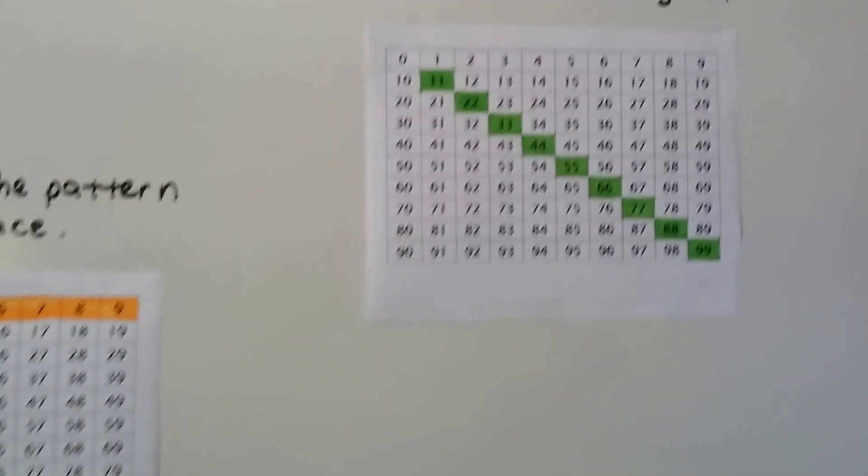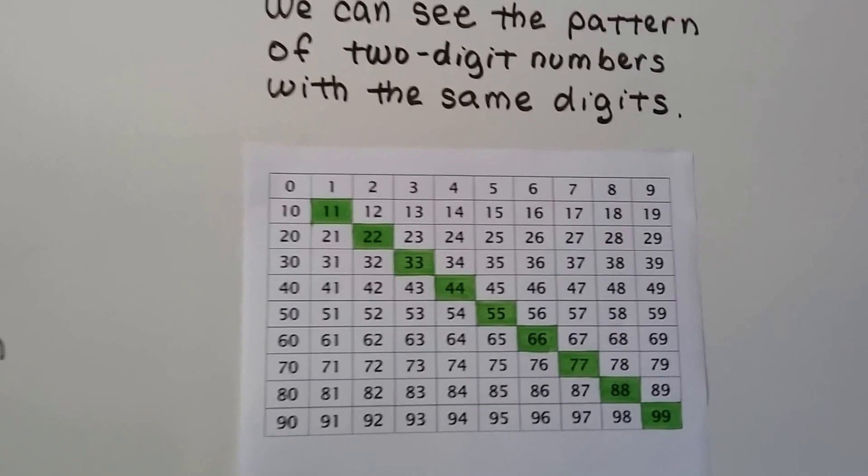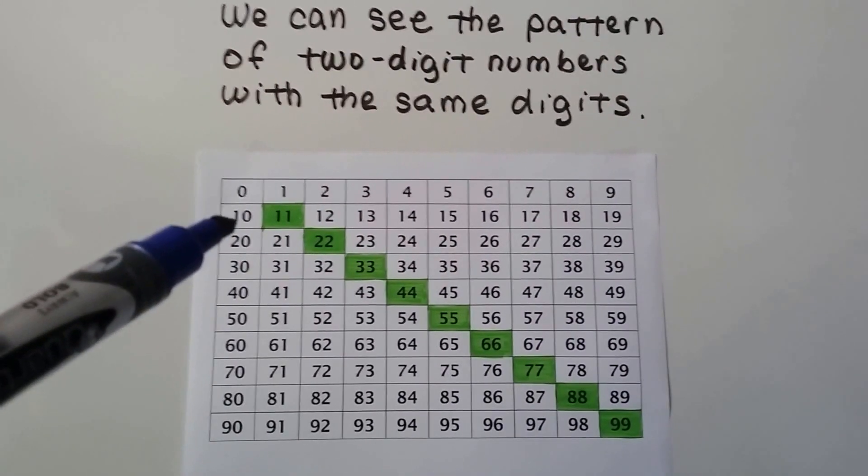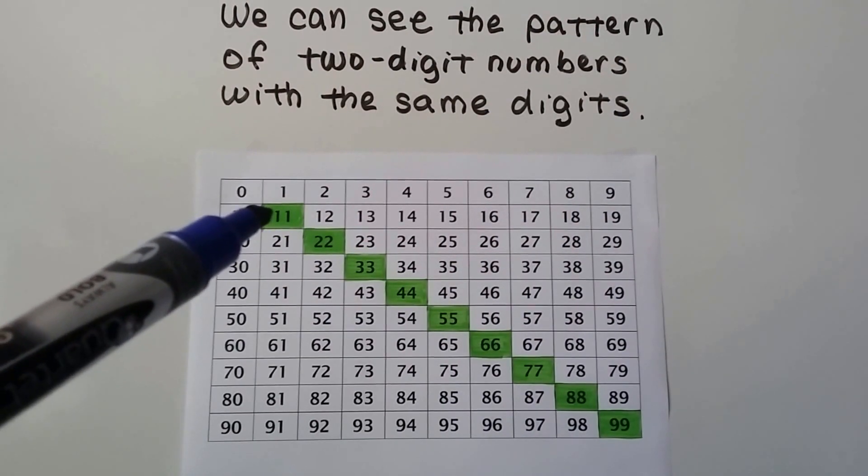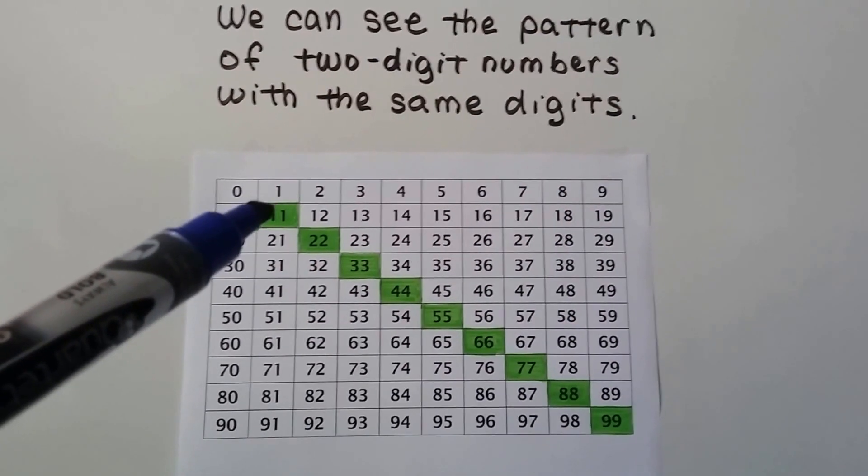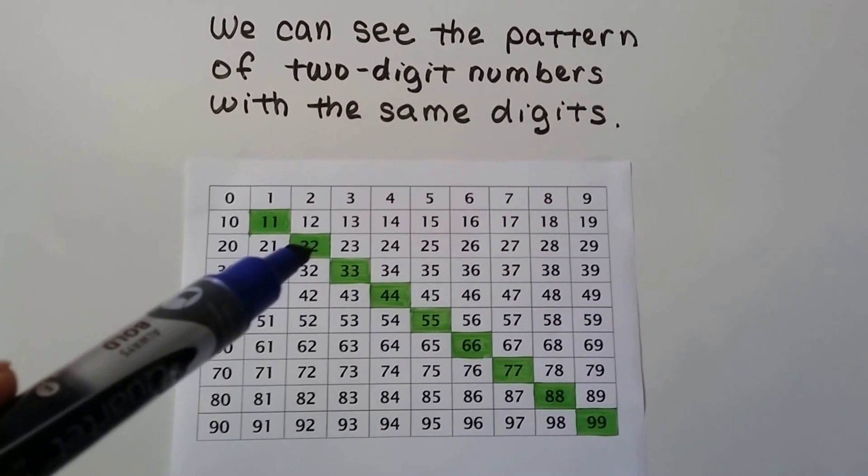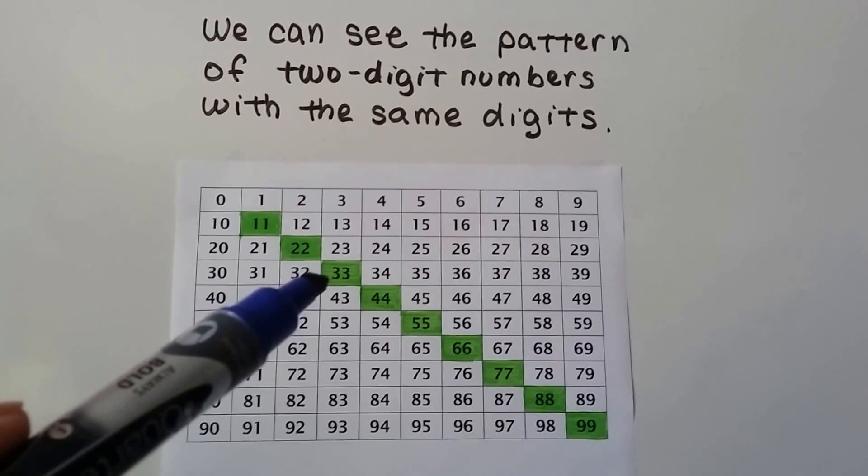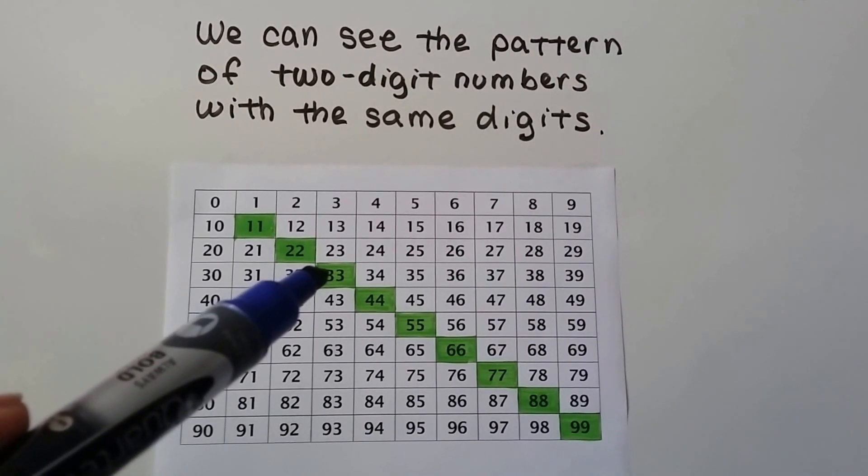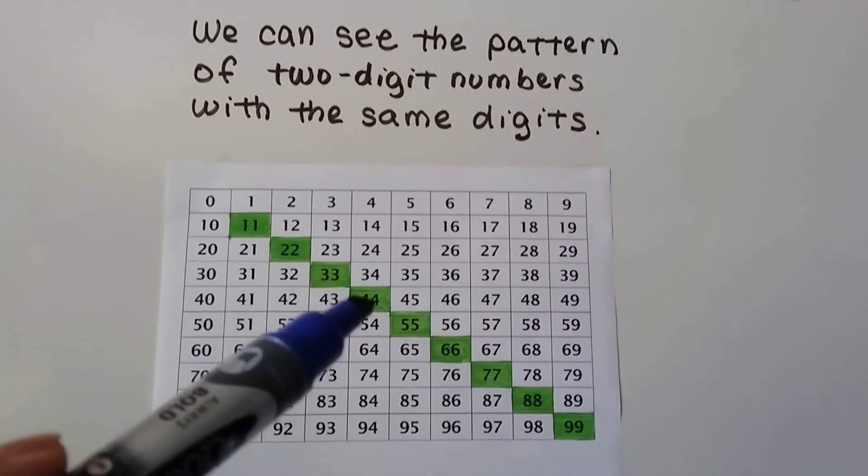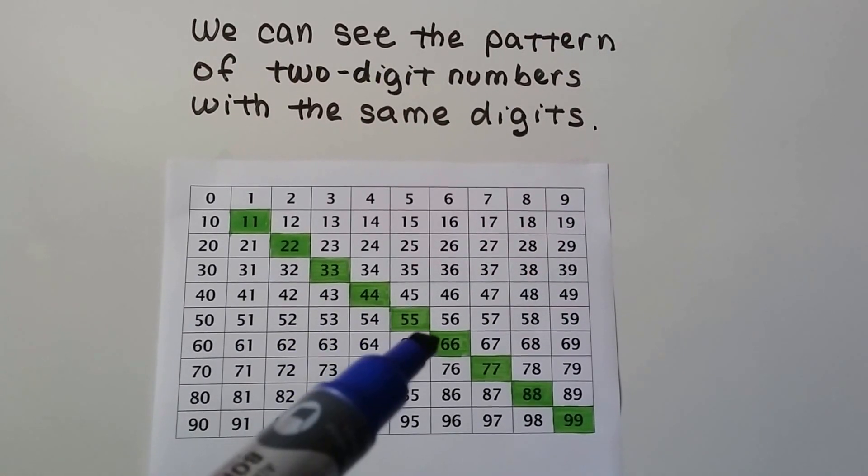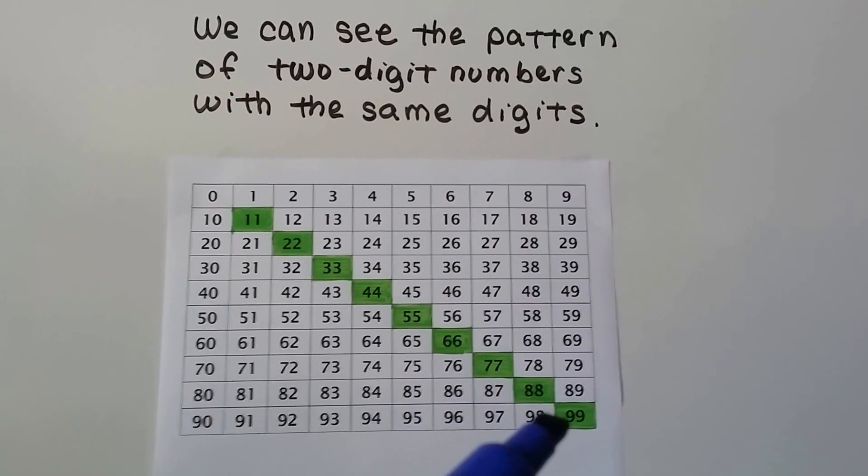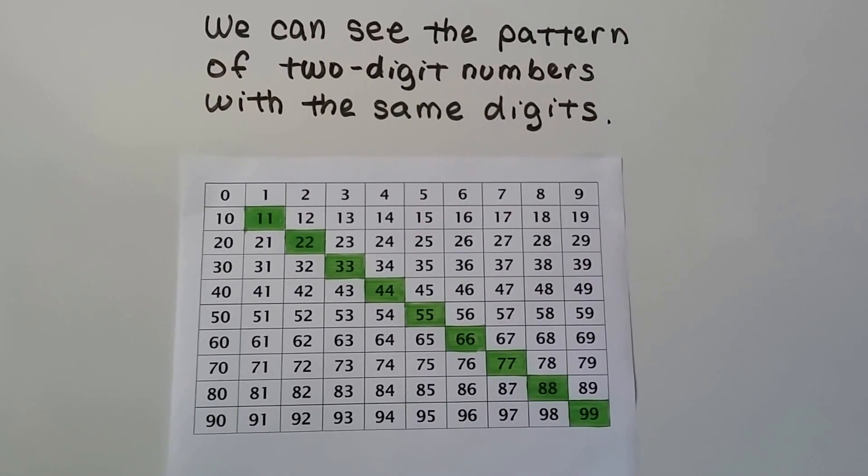We can see the pattern of two digit numbers with the same digits. We're starting with 0 and when we go down and to the right we have an 11. When we go down and to the right we have 22. When we go down and to the right again we have 33, 44, 55, 66, 77, 88, 99.